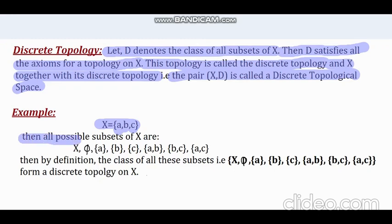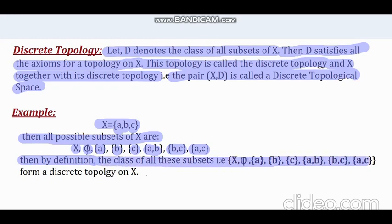Notice, here all possible subsets of X are: X itself, the empty set phi, the singleton sets A, B, C, and the two element sets {A,B}, {B,C}, and {A,C}. Thus by definition, the class of all these subsets form a discrete topology on X.